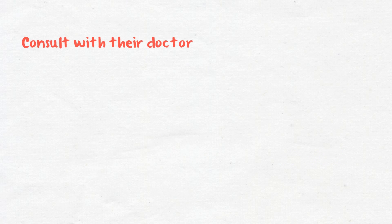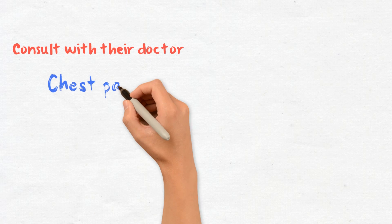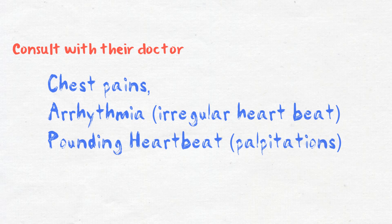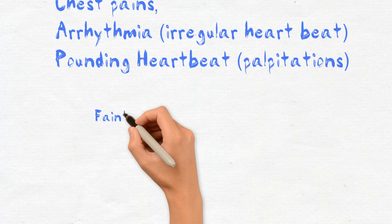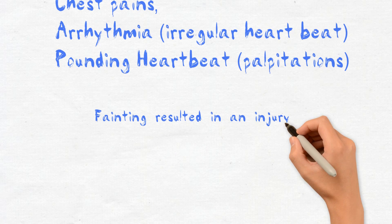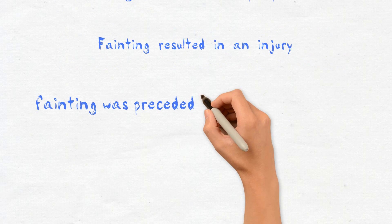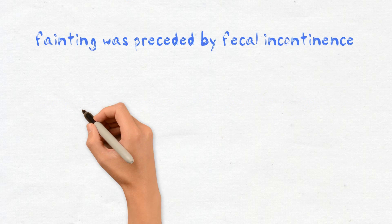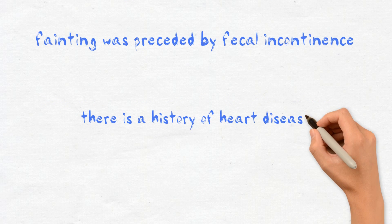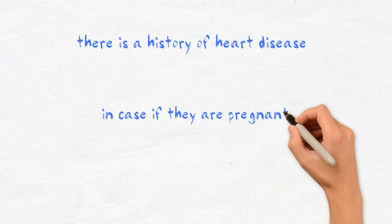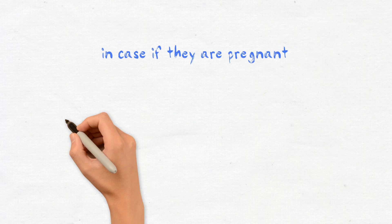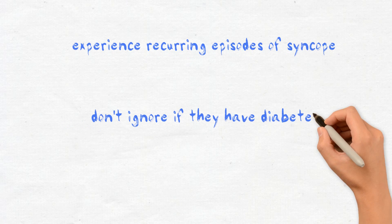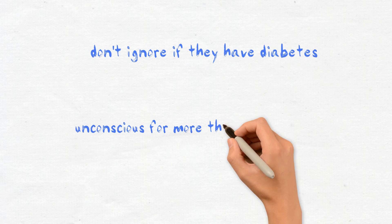People should consult with their doctor in certain situations: before losing consciousness there were chest pains, arrhythmia, irregular heartbeat, or palpitations; fainting resulted in an injury; the fainting was preceded by fecal or urinary incontinence; there is a history of heart disease; the person is pregnant; they experience recurring episodes of syncope; they have diabetes; or they were unconscious for more than a few minutes.